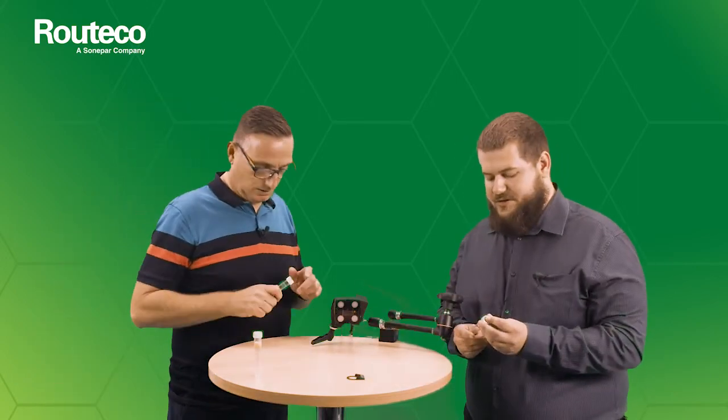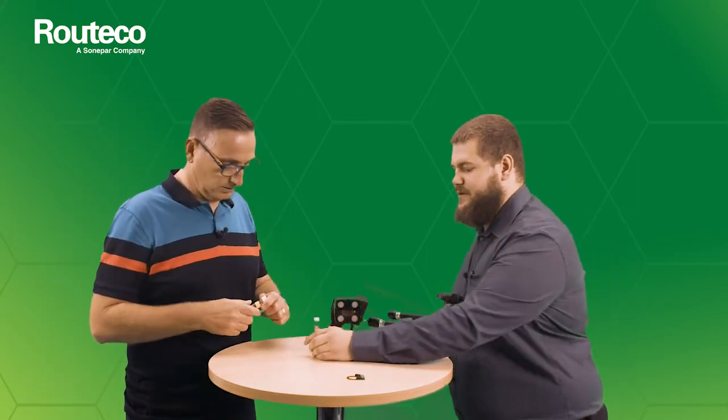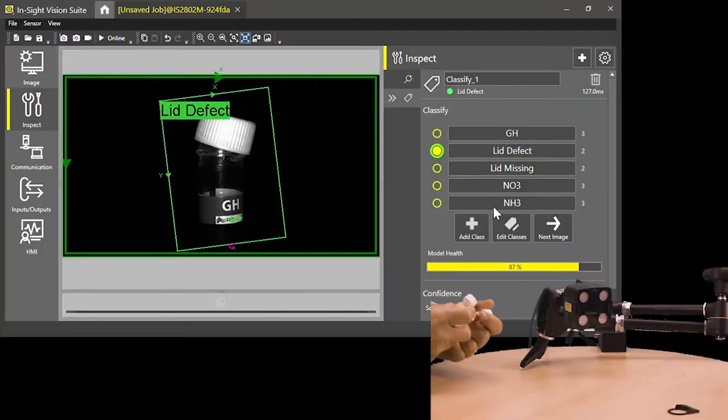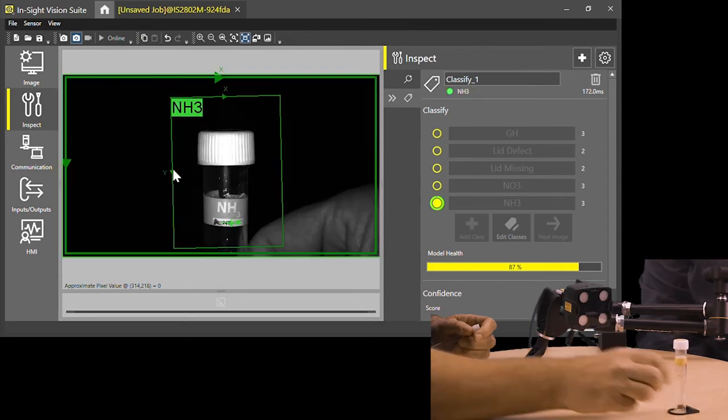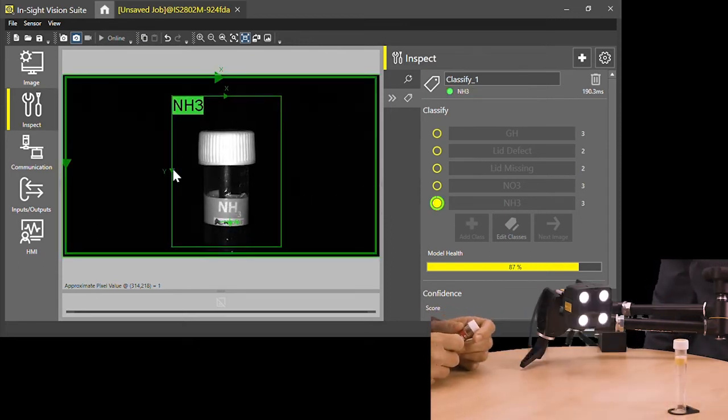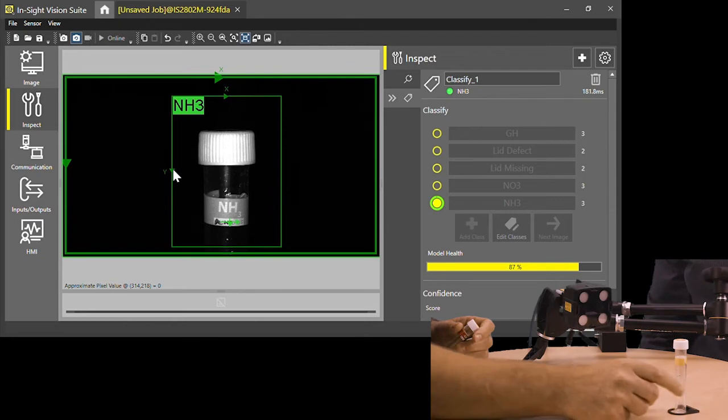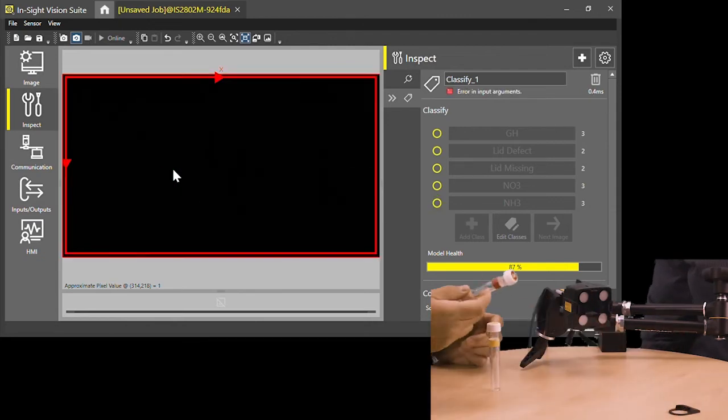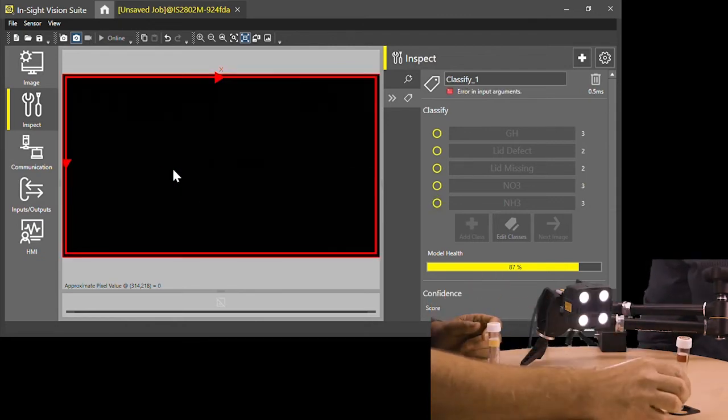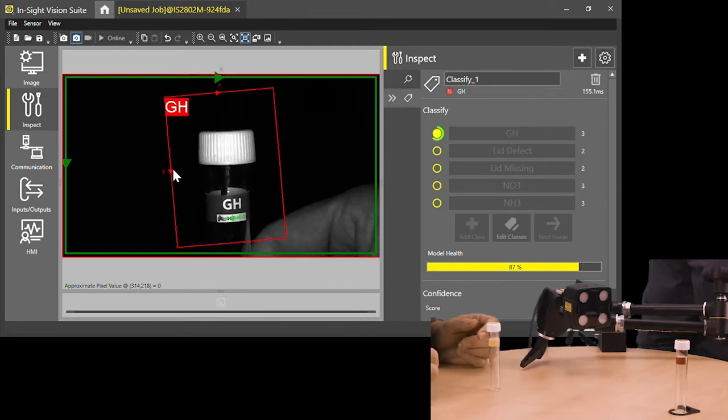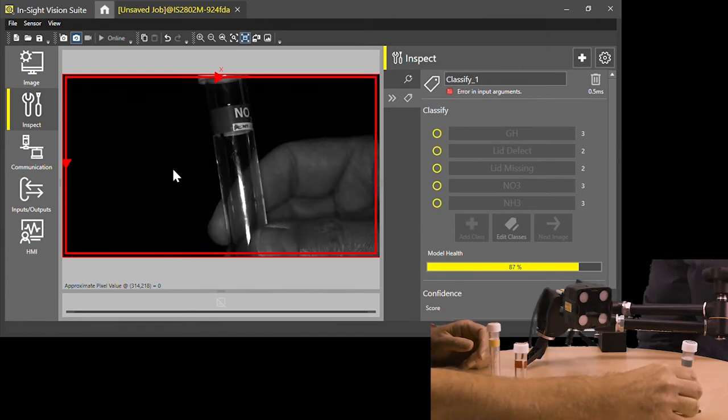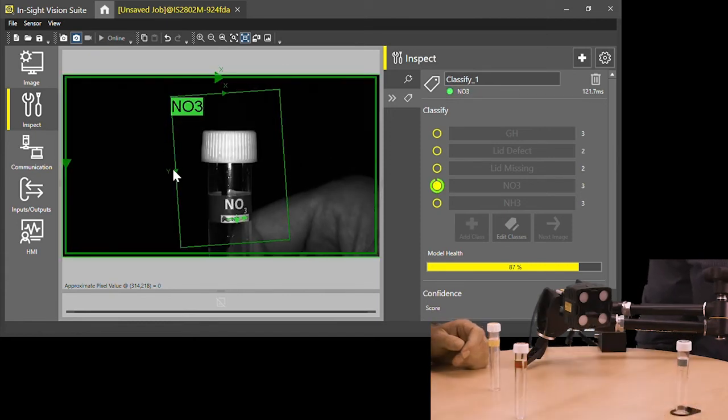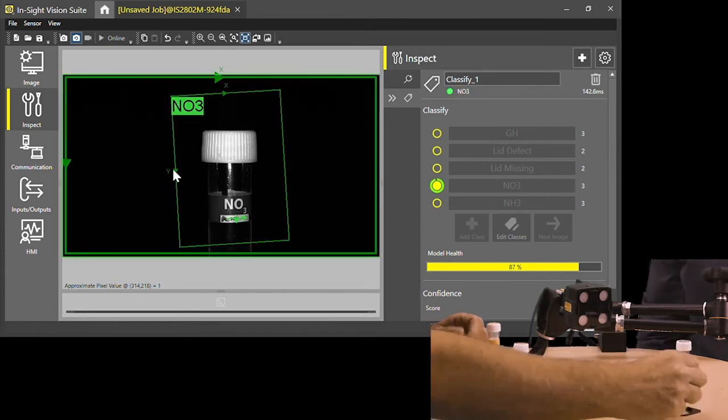And now what we can do is show the different positions. So I'm going to put the camera into a live trigger mode. Darren if you want to place each one in turn. You can see there the system's telling us it's really happy it's found a NH3 tube. So we can take that away and try a different one. So this is the GH tube. And again it's really happy that's GH. And the last one is the NO3. Again that's happy.